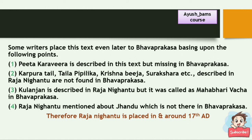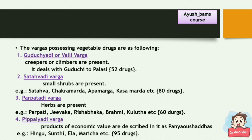The 10 Vargas of vegetable drugs in Rajanikandu: Guduchyadi Varga (also known as Valdi Varga) contains creepers or climbers from Guduchi to Palasi — total 52 drugs. Chathavadi Varga contains small shrubs such as Chathava, Chakramardha, Apamarga, Kashamardha, etc. — total 80 drugs. Parpatadi Varga contains only herbs such as Parpatti, Jeevaka, Rishabhaka, Brahmi, Kulatha, etc. — total 60 drugs.